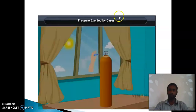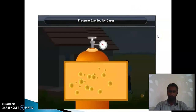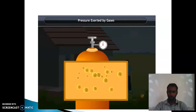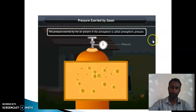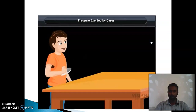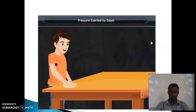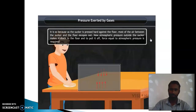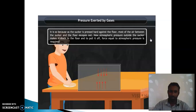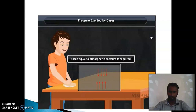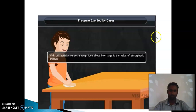So we conclude that air also exerts pressure. The Earth is covered with an envelope of gases known as the atmosphere, and air or gases can exert pressure. The pressure exerted by the air present in the atmosphere is called atmospheric pressure. Take a good quality rubber sucker and press it hard on the floor so that it sticks. Now try to pull it off — it is very hard to pull. This gives us an idea about how large the value of atmospheric pressure is.